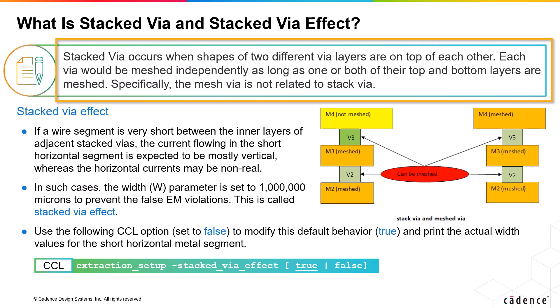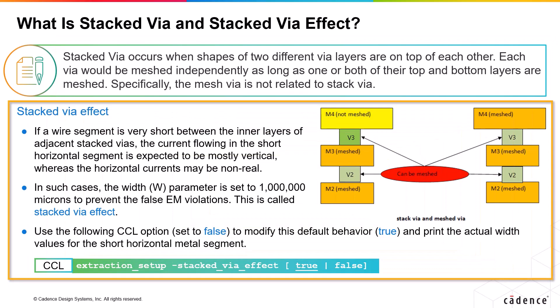Specifically, the mesh via is not related to stacked via. If a wire segment is very short between the inner layers of adjacent stacked vias, the current flowing in the short horizontal segment is expected to be mostly vertical, whereas the horizontal currents may be non-real.